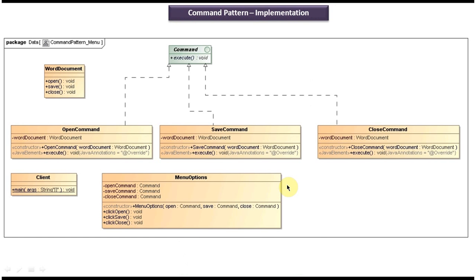This is the class diagram of the scenario we just discussed. Here you can see the WordDocument, which is the receiver — it has open, save, and close methods. There is also a Command interface with an abstract execute method. This interface is implemented by three concrete classes: open command, save command, and close command. Each of these has a receiver object WordDocument reference and an execute method that calls the receiver's open, save, or close method based on the command.